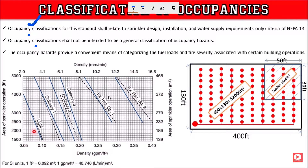There are categories of fuel load among several hazards and several zones. We can see the categories of these hazards, such as light hazard, ordinary hazard, and extra hazard.